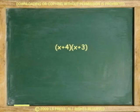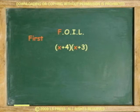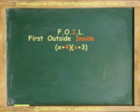Now, let's multiply two binomials. Multiplying binomials is often called the FOIL method, where F stands for first terms, O for outside terms, I for inside terms, and L for last terms.